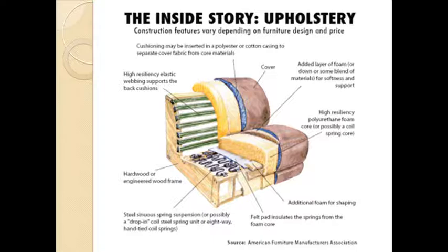Now if we go inside an upholstered material, let's analyze what any component of upholstered material consists of. Starting from the base, this is the hardwood or engineered wood frame. You can also see the steel spring components, which together with the wooden frame are responsible for the quality of any upholstered material.